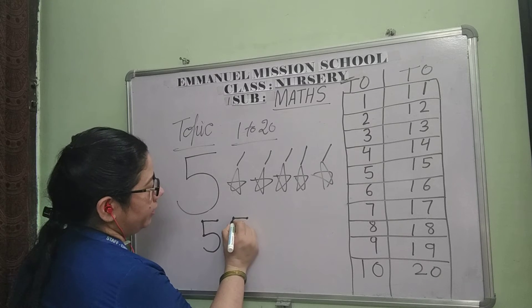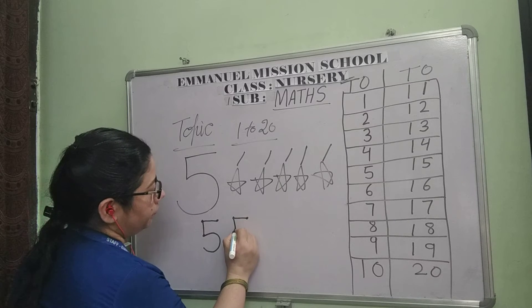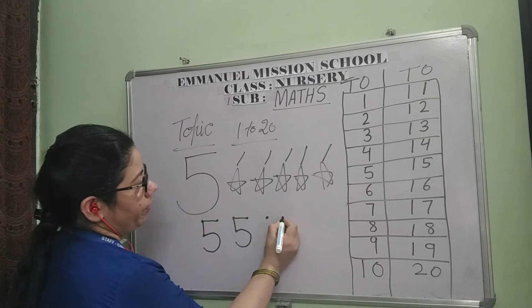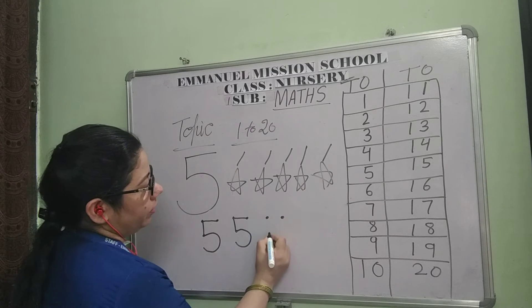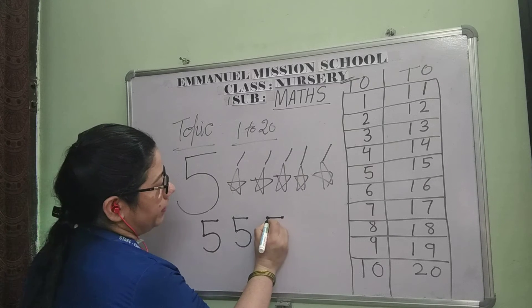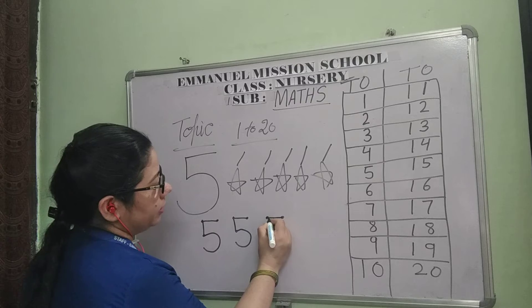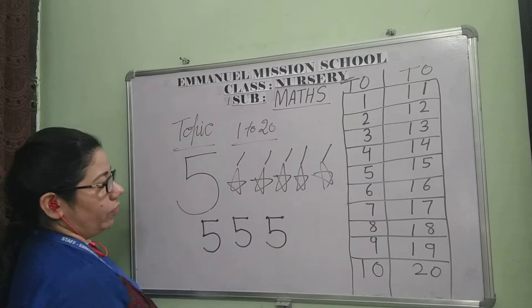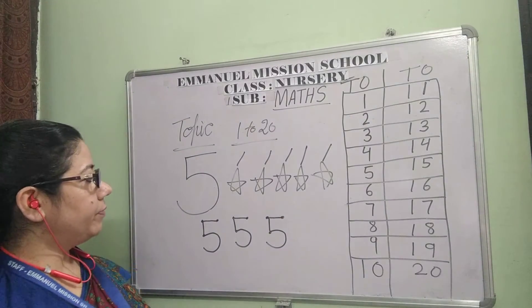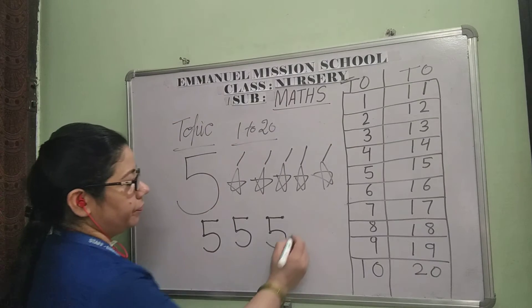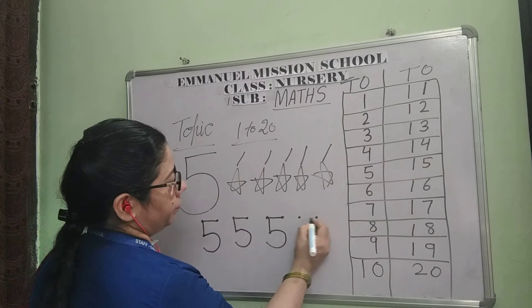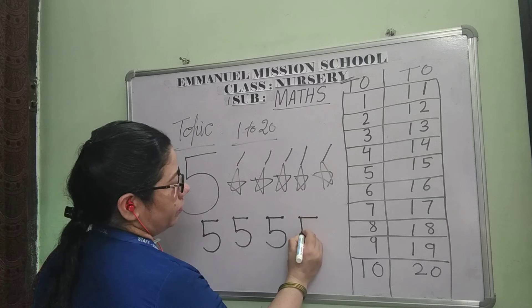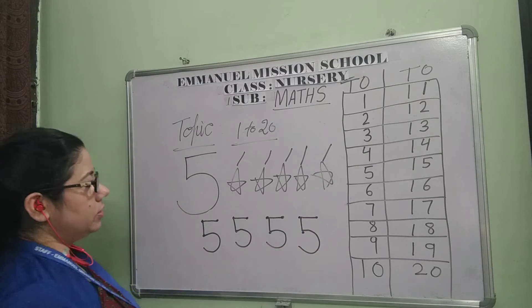How to write? 5. First of all, make a dot. Sleeping line, standing line and half cup. First of all, make 5.